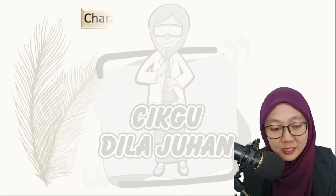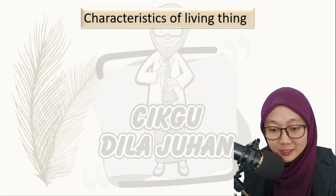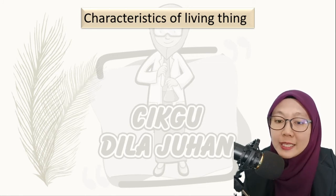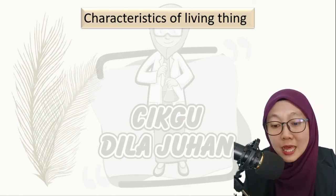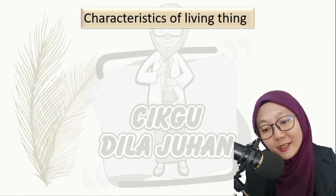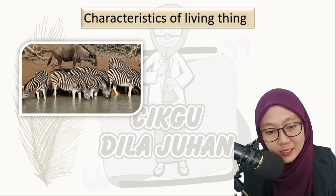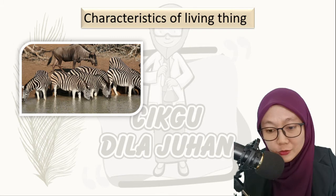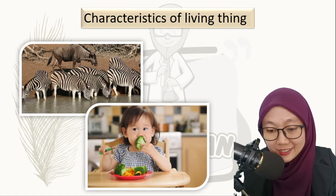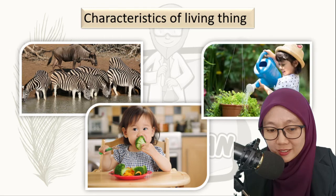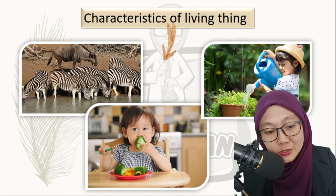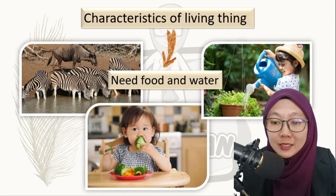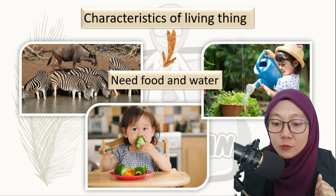Now let's see the characteristics of living things so we can differentiate between living things and non-living things. You can see there is a zebra drinking water, a girl eating something, and a girl watering the plants. This shows that living things need food and water.